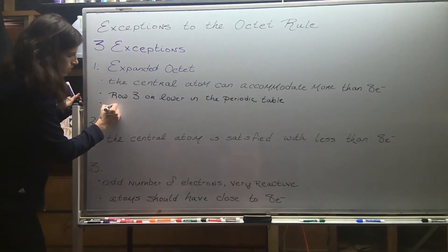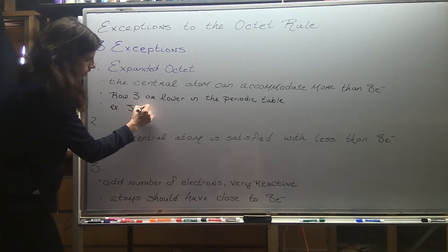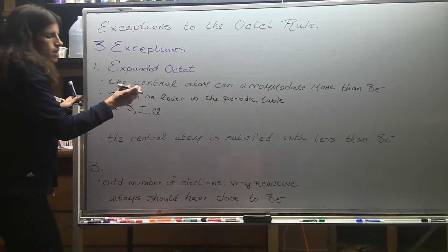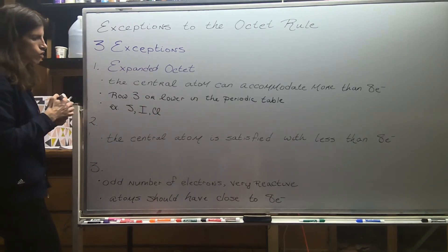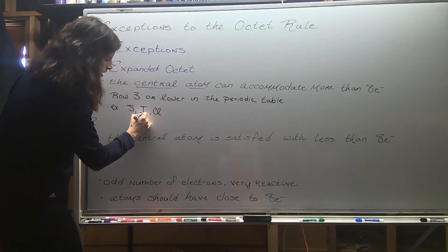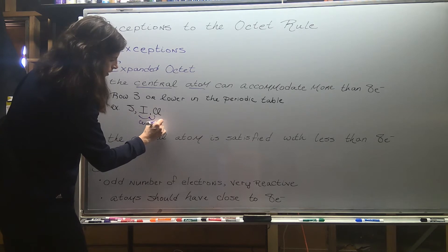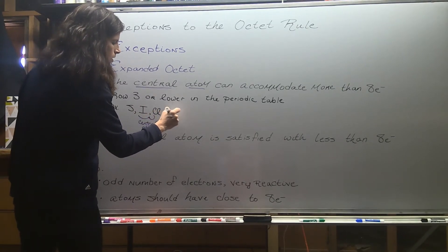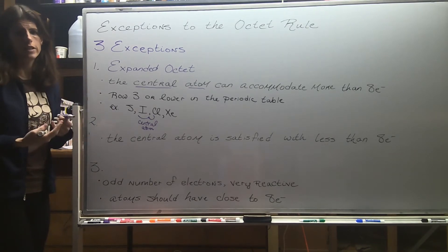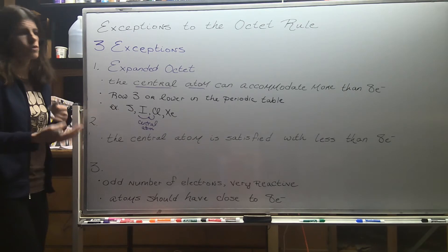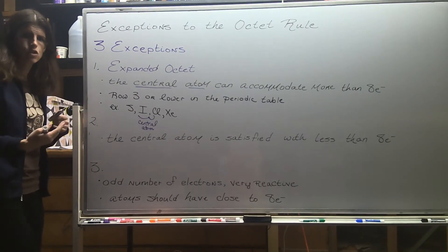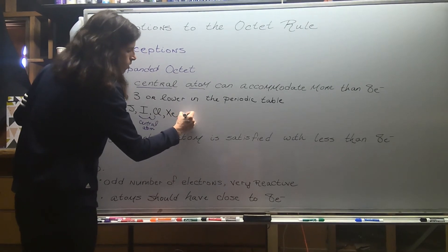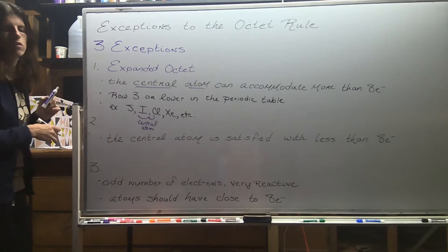Some examples of central atoms that will do an expanded octet include sulfur, iodine, and chlorine. Iodine and chlorine are both group seven atoms - normally they don't do an expanded octet, but when they're serving as the central atom, then you'll see them doing an expanded octet. Xenon is another example: xenon is group eight and has a full valence shell, so we don't typically think of group eight atoms being involved in bonding at all, but xenon does when it's a central atom. This isn't a comprehensive list - if you're in row three or lower, it's a possibility.